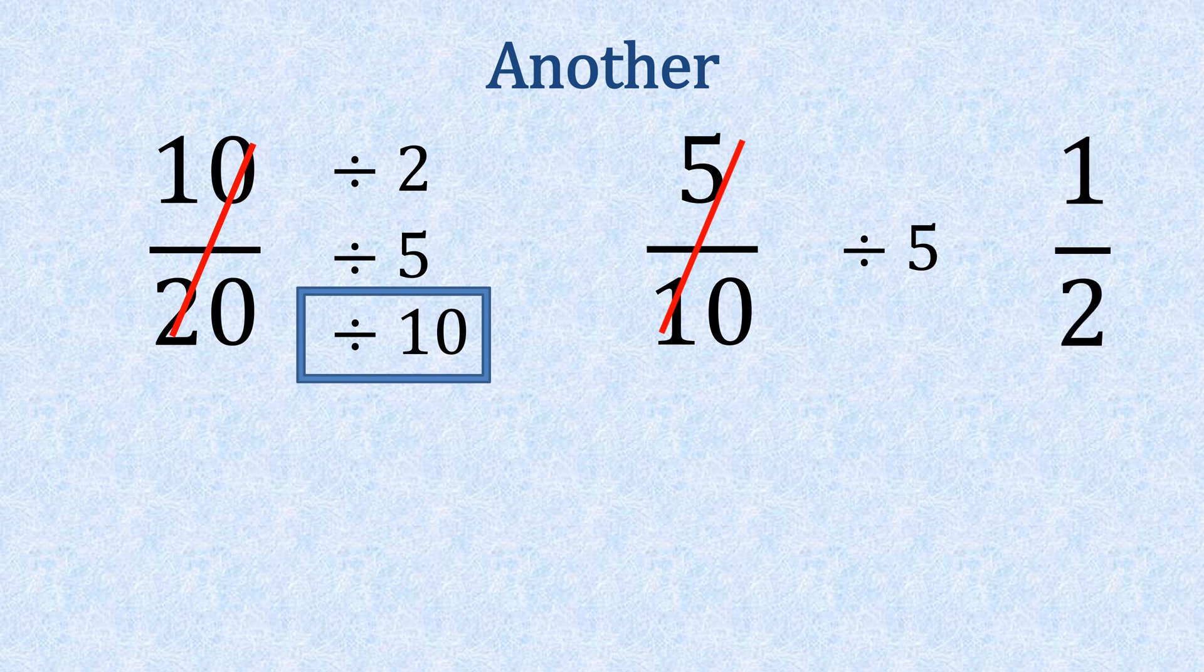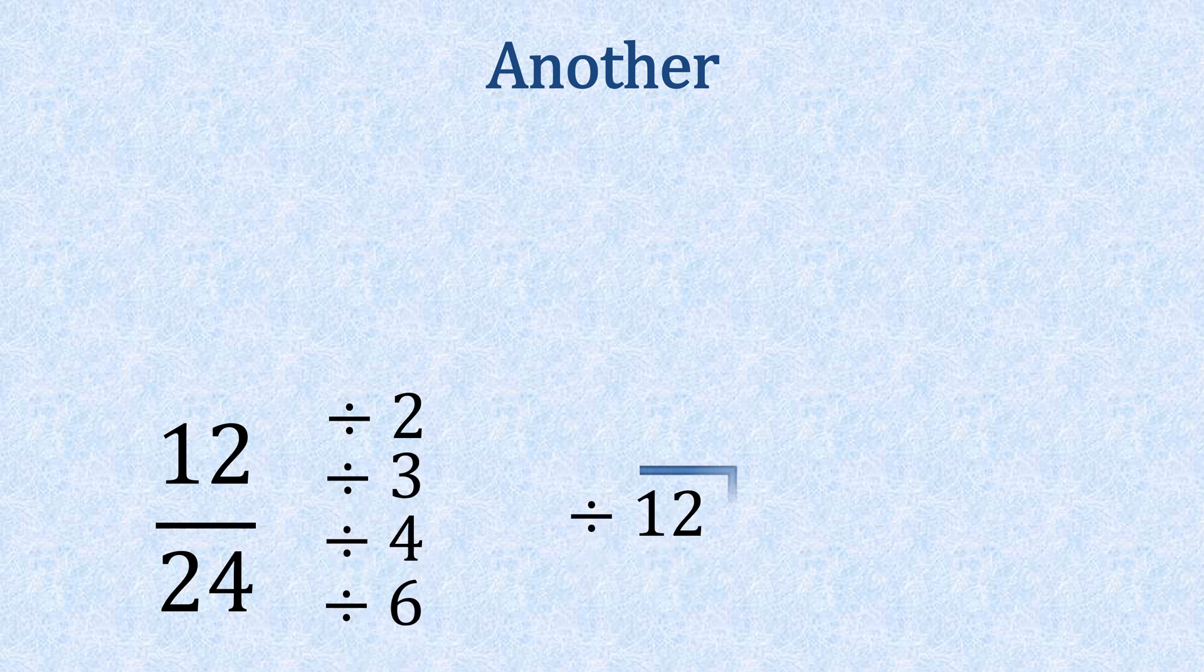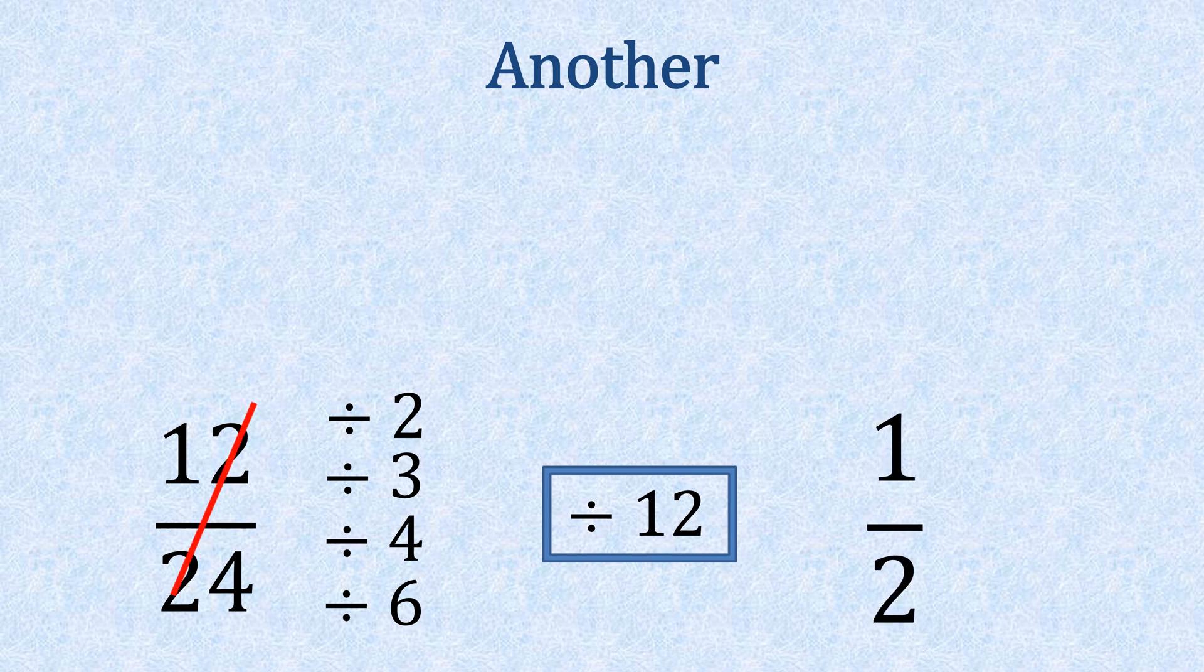Let's have a look at twelve twenty-fourths. Lots go into this: two, three, four, six, and twelve. So if we divided twelve by twelve gives us one and twenty-four by twelve gives us two. That takes us to one half because we use the highest common factor, which is twelve.